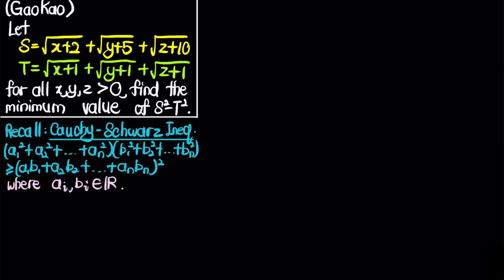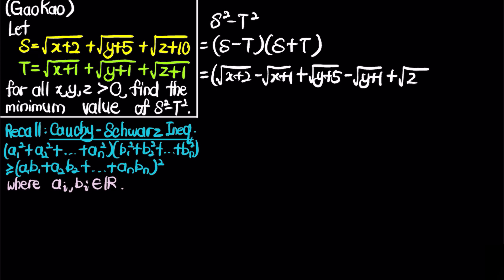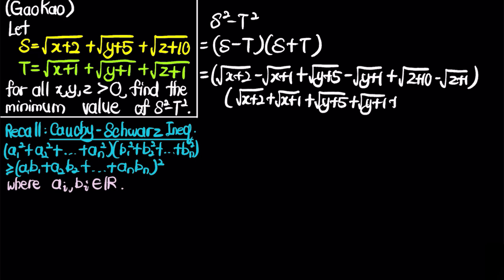To solve this problem, we use Cauchy-Schwarz. First, we observe that S² minus T² factors naturally as (S − T)(S + T). We write S − T as (√(x+2) − √(x+1)) + (√(y+5) − √(y+1)) + (√(z+10) − √(z+1)), and S + T is the same expression with minus signs changed to plus signs.